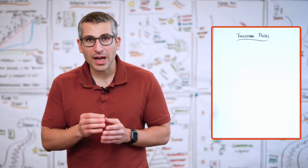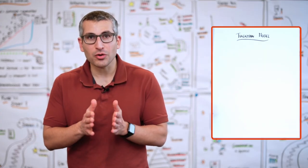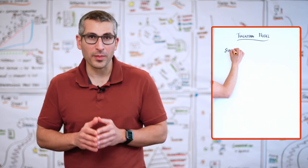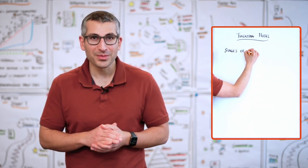So the Tuckman model describes four stages that a team goes through. Forming, storming, norming and performing. Does that ring a bell? I guess so.